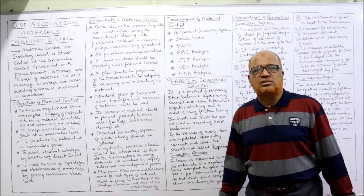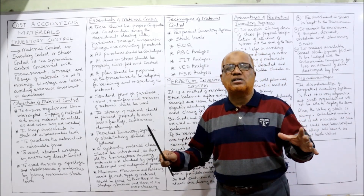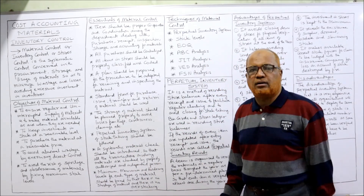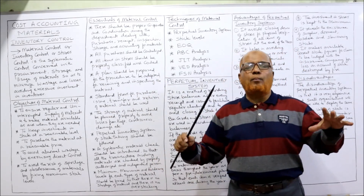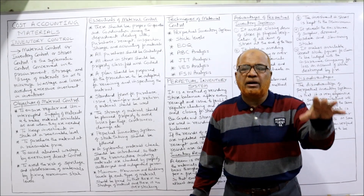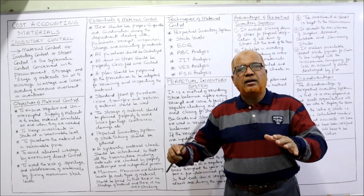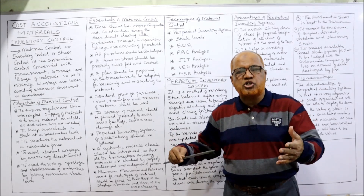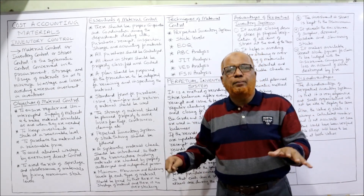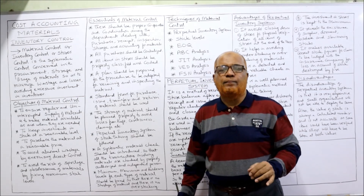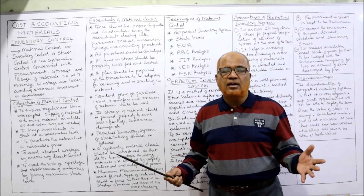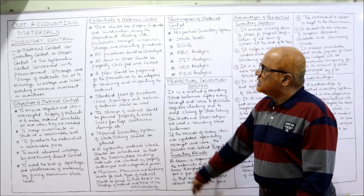The next topic is the essential requirements to make inventory control successful. The first requirement is that there should be proper coordination and cooperation among the different departments involved with material — the purchasing department, inspection department, storage department, and production department. There should be proper coordination among all these departments; only then can we achieve the objectives of inventory control.